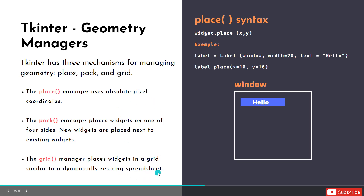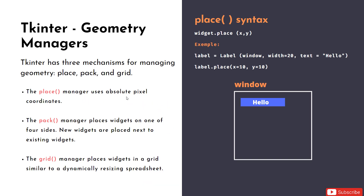The first is the place manager. With place, we use coordinates to position the widget. For example, with a label, we call the place method and give two parameters: x value and y value. Here, x is 10 and y is 10.